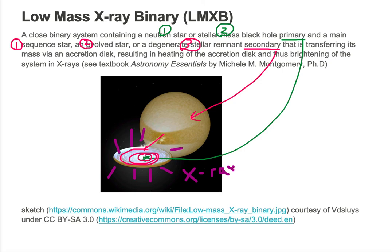99% of the light emitted from a low-mass x-ray binary is in x-rays; about 1% is in the visible band. Of all the objects in the system, it is the accretion disk that is emitting most of this x-ray light.